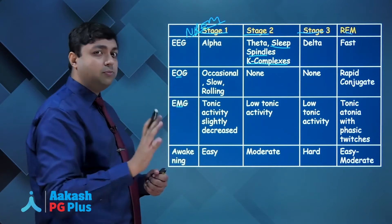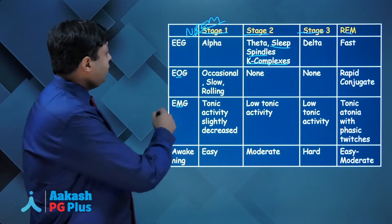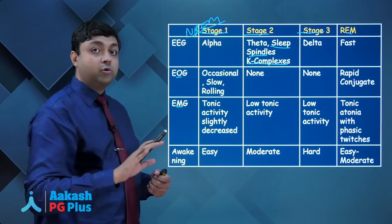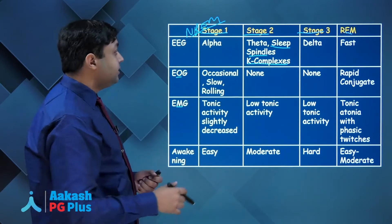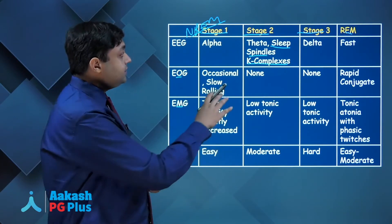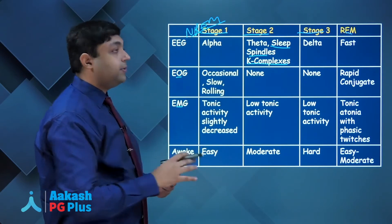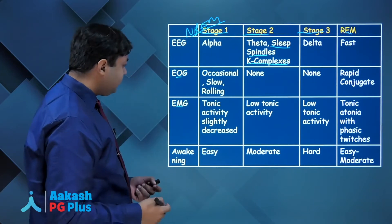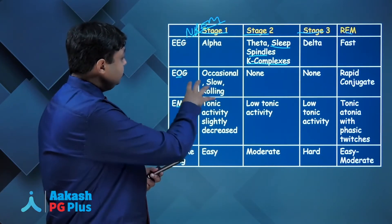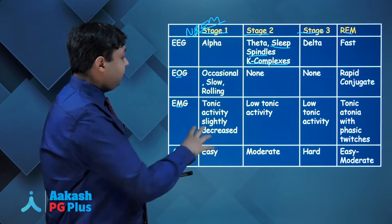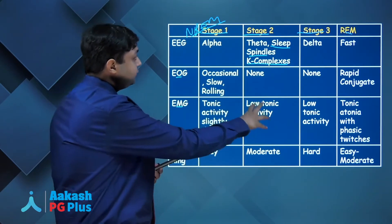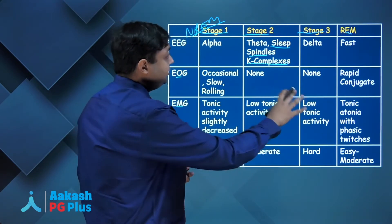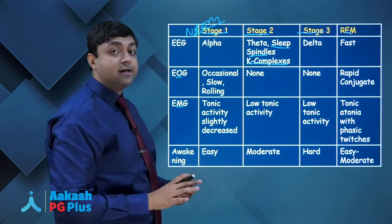REM sleep has fast, almost beta-like activity. The electrooculogram in stage 1 of NREM sleep shows occasional slow rolling movements but nothing more. Stage 2 and 3 have no eye movements, while the REM stage has rapid conjugate eye movements — hence the name rapid eye movement sleep. The electromyogram shows that in stage 1 sleep, tonic activity is slightly decreased, and it keeps decreasing as we go through stage 2 and stage 3.